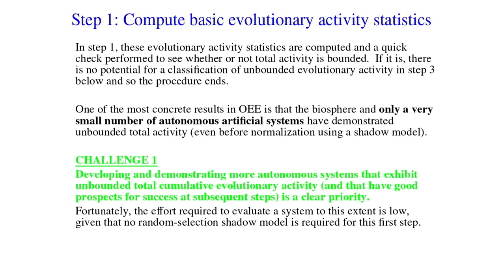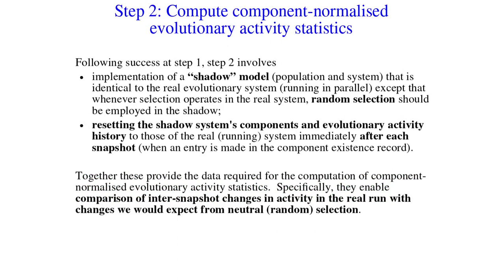Fortunately, the effort required to evaluate a system to this extent is low, given that no random selection shadow model is required for this first step. Following success at step one, we do now require in step two the implementation of a shadow model — a population in a system identical to the real evolutionary system, running in parallel, except that whenever selection operates in the real system, random selection should be employed in the shadow. We also need to reset the shadow system's components and activity history to those of the real run immediately after each snapshot, which is when an entry is made in the component record.